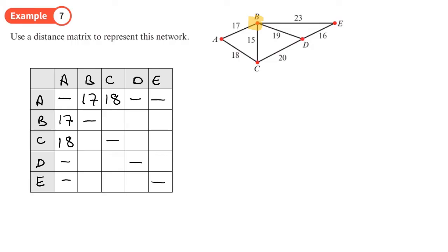So B to C is 15, so we'll fill that in. So we can put 15 here. B to D is 19, so 19, 19. And then B to E, 23, 23, 23, 23 there.